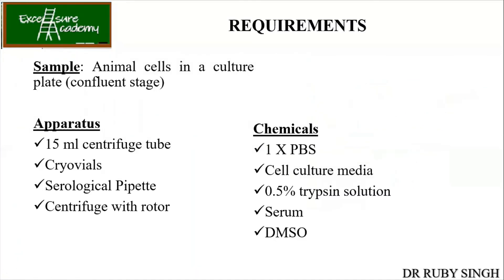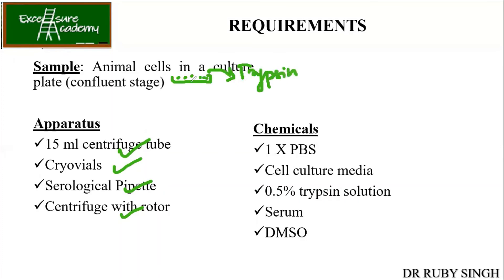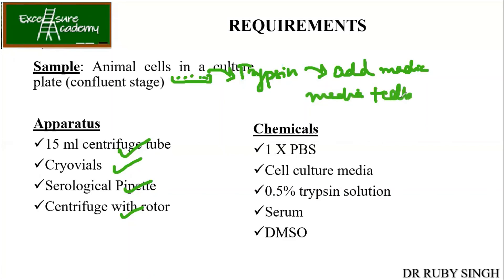What are the requirements to carry out preservation of animal cells? When we say confluence, it means 90% of the animal cells are in the log phase. You need a 50 ml centrifuge tube, cryovial, serological pipette, and centrifuge rotor. First, the plates are there having the culture — add trypsin so the cells detach from the surface. Then add media to inhibit the activity of trypsin. With the media plus cells, centrifuge them. Since these are animal cells, if you increase the speed too much the cells will rupture — so we hardly use around 2000 rpm for one to two minutes.